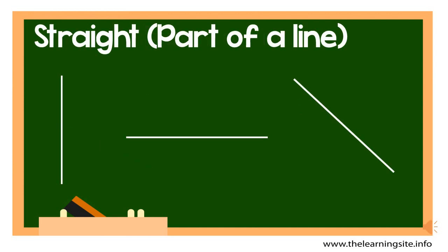We call the straight sides parts of a line. We call them parts because we can see where this part starts and where it ends.